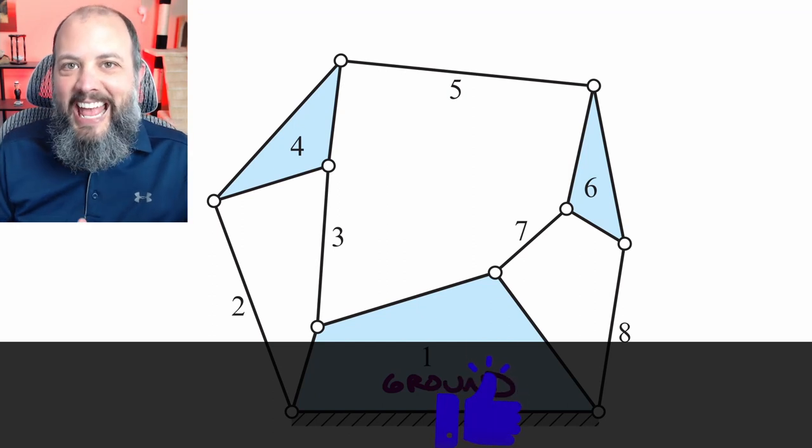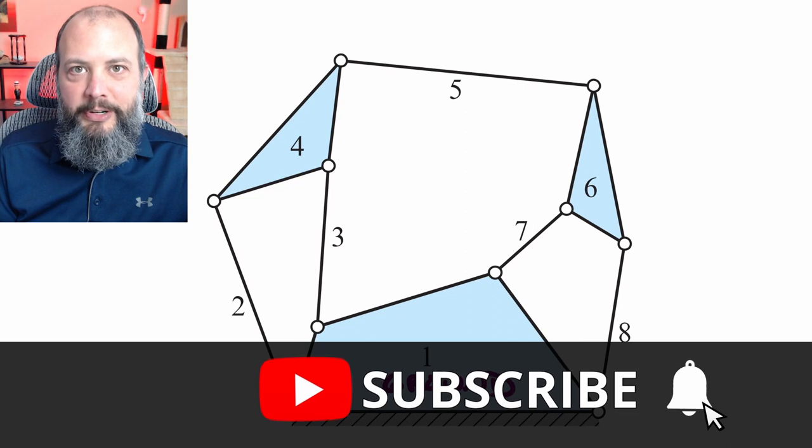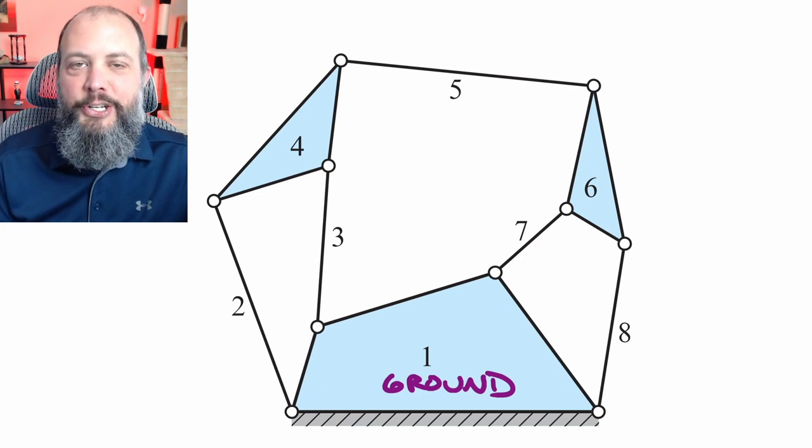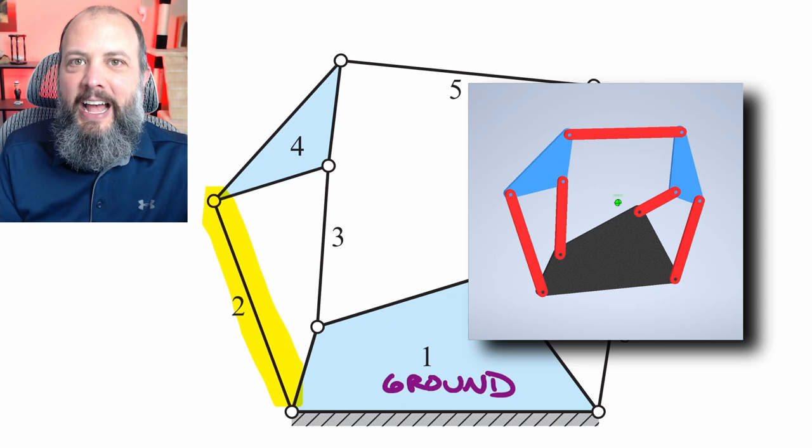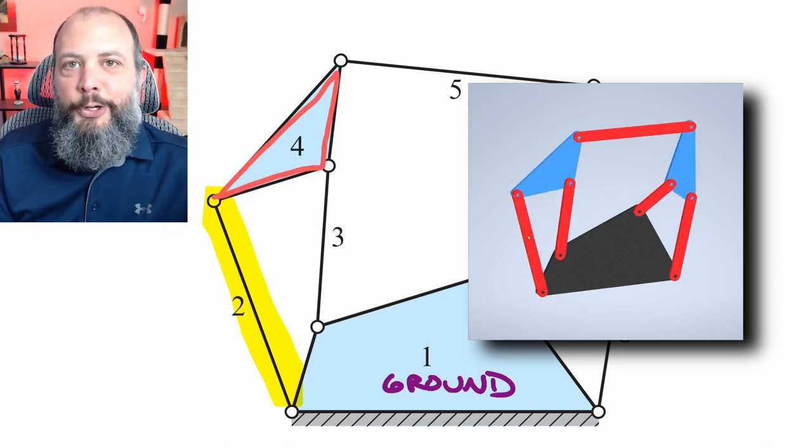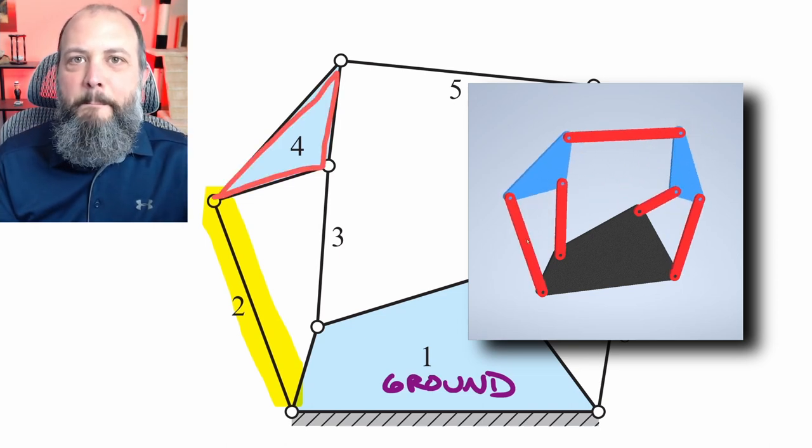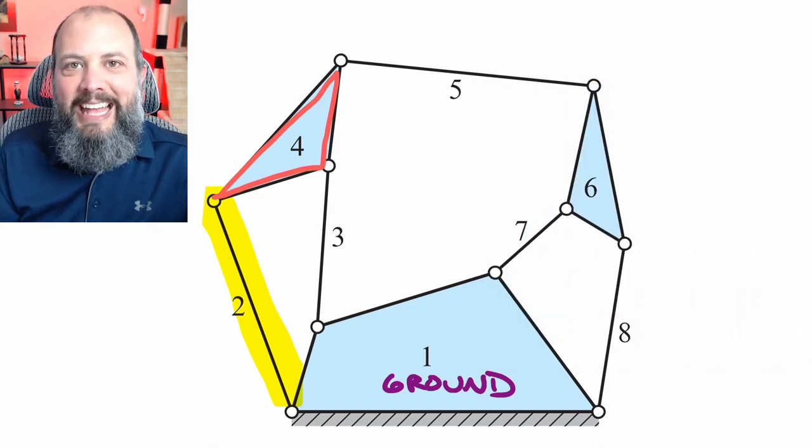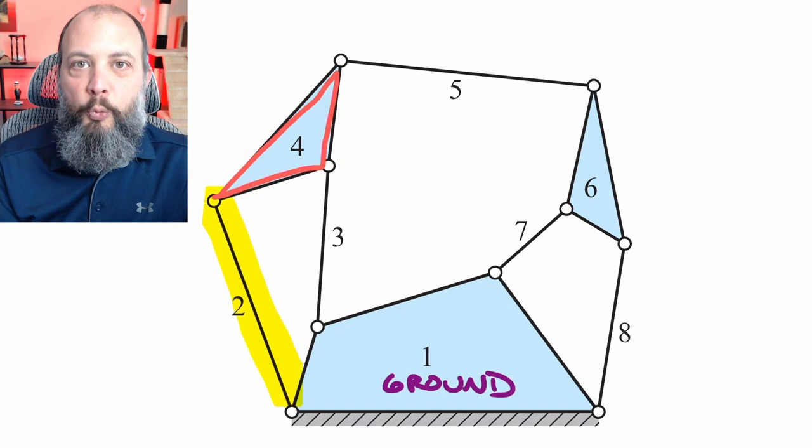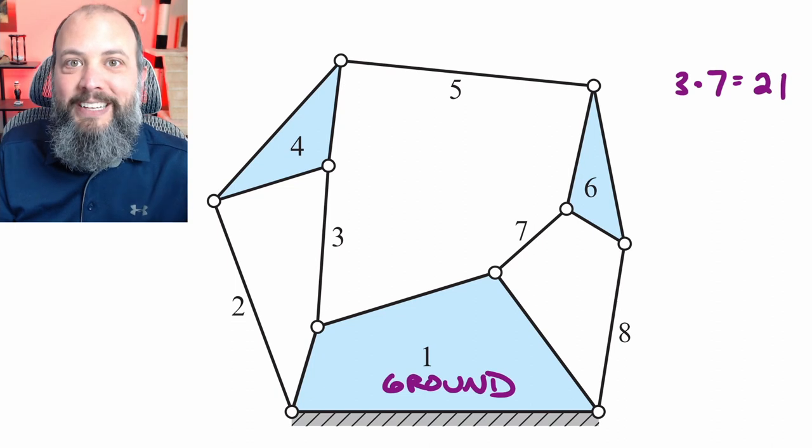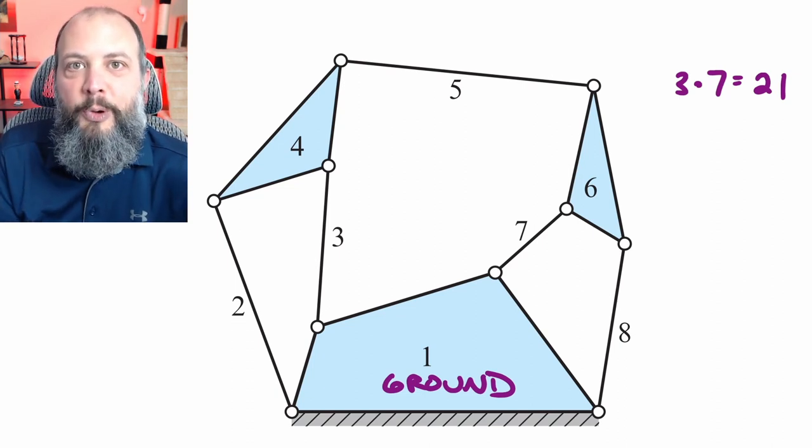First example: we've got an eight-bar linkage here where I've noted that link one is ground. This big quadrilateral here, you see the diagonal lines beneath it, that is ground. That's a fixed link that does not actually move. So just to explain what this picture is representing, this highlighted line here is a link labeled as link number two. Just consider this to be a metal rod. Then that triangle labeled as link number four, consider that to be like a metal plate that has three different connection points to it, so it can connect to three different links. So in total, there are eight links labeled on this drawing, but the first one is ground, which is the fixed link which can't move. So we're not including that in mobility. If I count the number of moving pieces in this system, there are only seven. So the total mobility of this system is three times seven or 21 before we subtract away any of the joints.